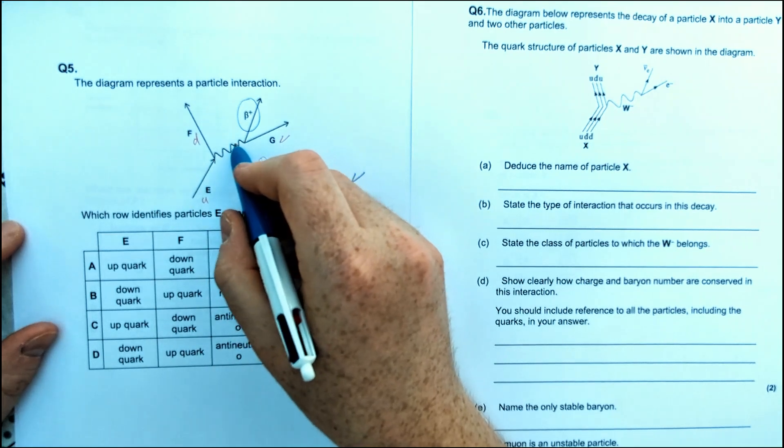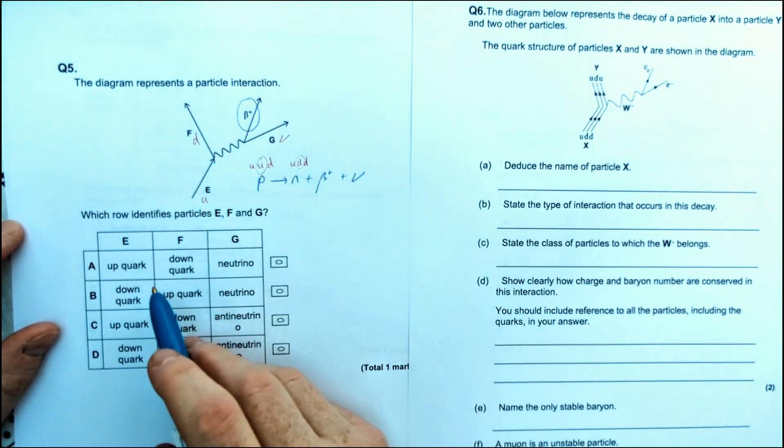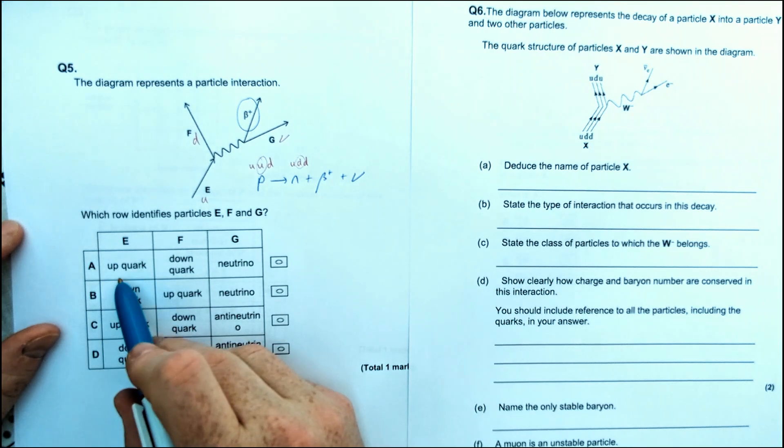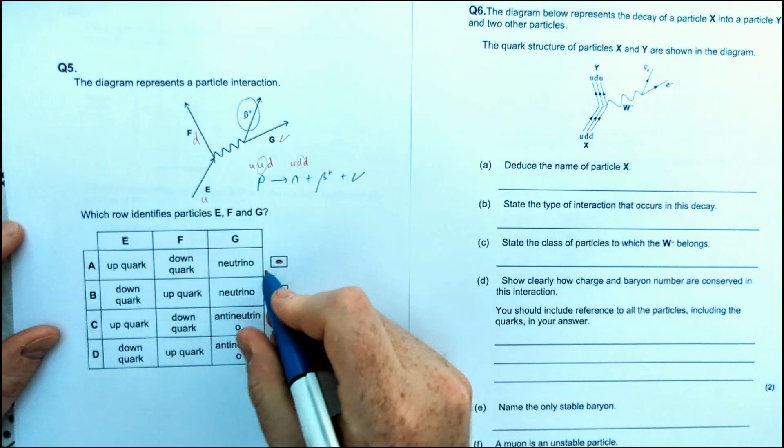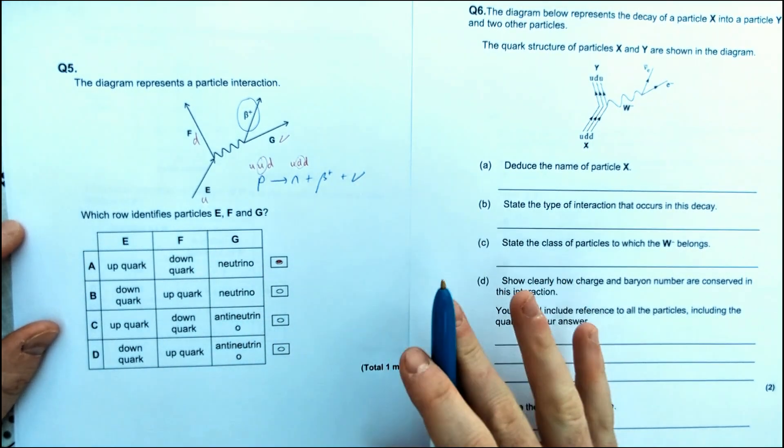We don't have to worry about the exchange particle in this question, which is very nice of it. So let's have a look at which one of these matches up with what we're trying to find. Up makes down, plus neutrino. It's the first option. It saves us some time. We've figured it out already. So it's answer A for this question.